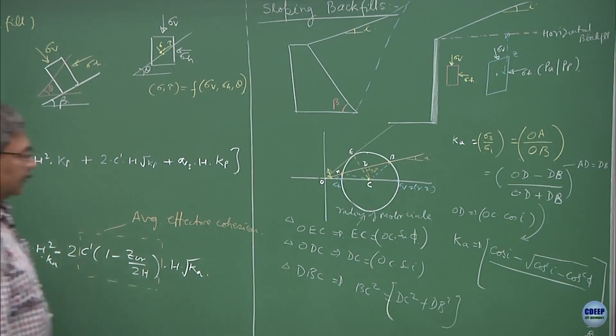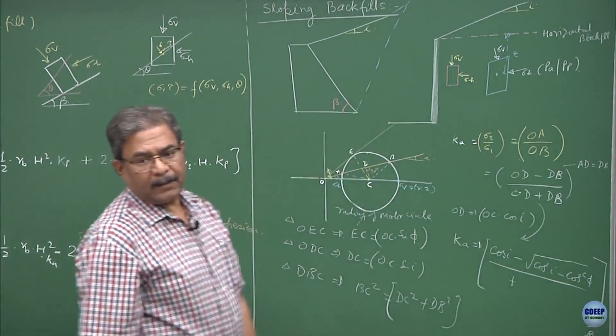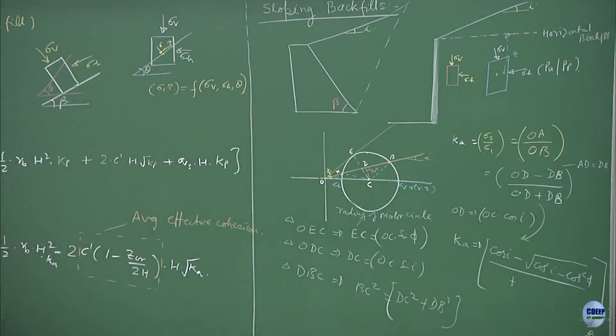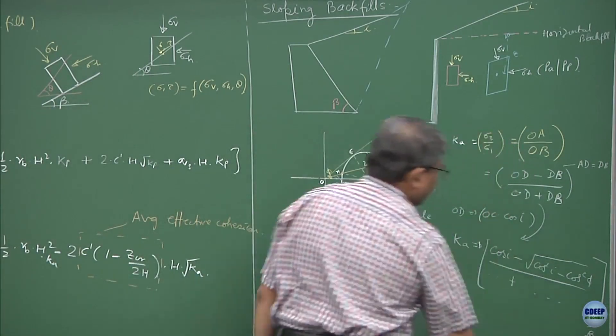Cos i minus under root of cos square i minus cos square phi divided by cos i plus under root of cos square i minus cos square phi.